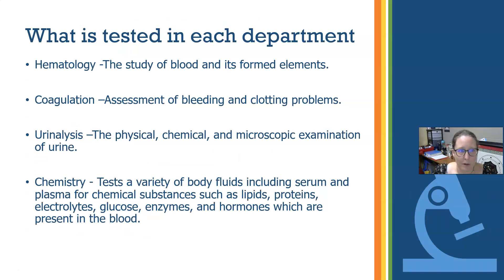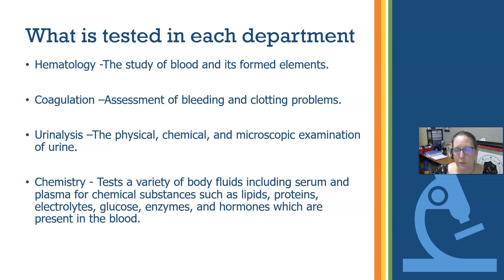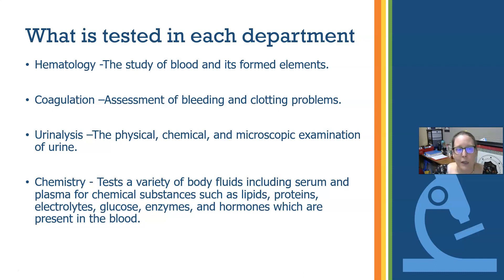What is tested in each department? Hematology looks at blood and all its formed elements — specifically white cells, red cells, platelets, and the type of white cells present. We often do blood smears looked at under the microscope, and the analyzer counts white cells, red cells, hemoglobin, platelets, and more. Coagulation assesses bleeding and clotting problems, done to assess treatment with blood thinners or to assess risk of bleeding before surgery.